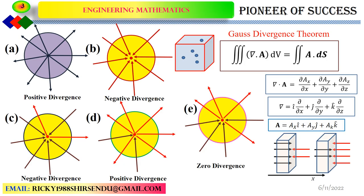We will start with a quick recap of our previous video on the Divergence concept. If you have a positive divergence then there is a point of source from where vectors are going outwards. For a negative divergence we have a point of sink where vectors are coming and meeting at a particular point. It is not necessary that all vectors point outwards for positive divergence — it could be a combination, and when vectors pointing outwards equal vectors pointing inwards we get zero divergence.